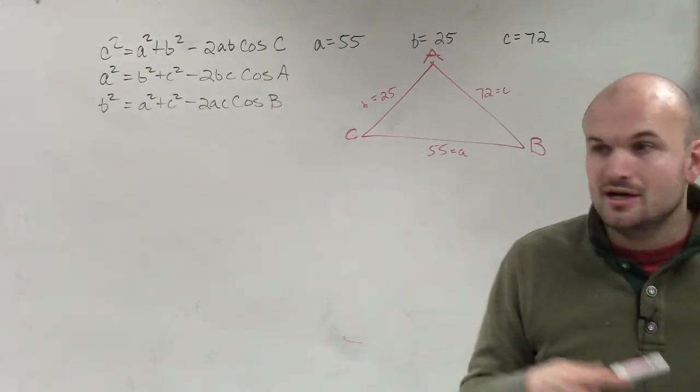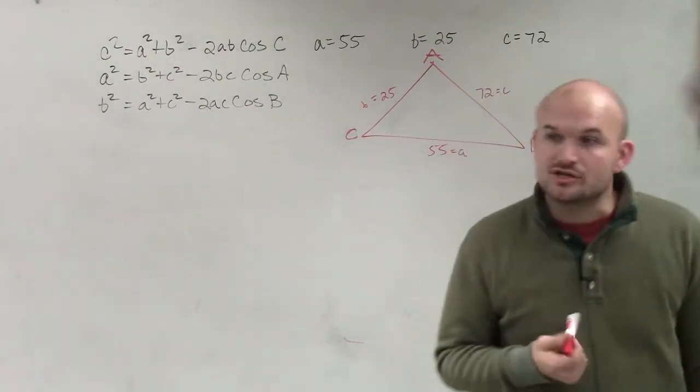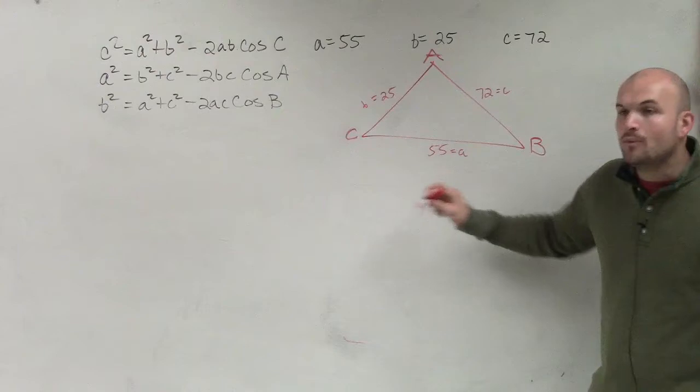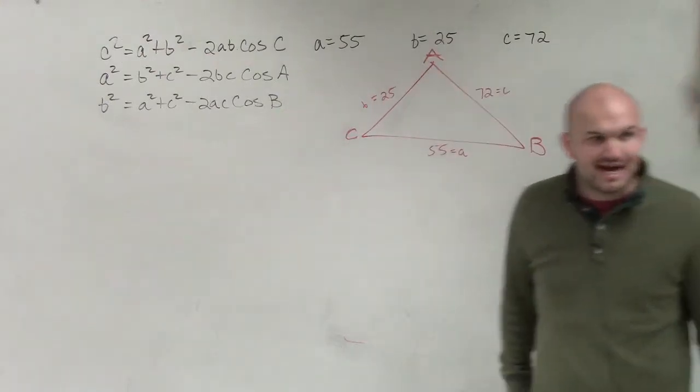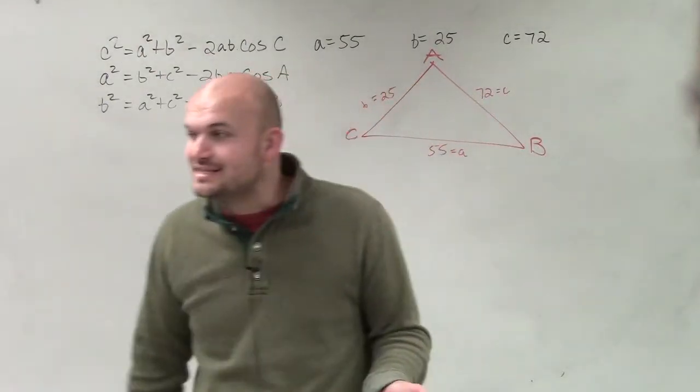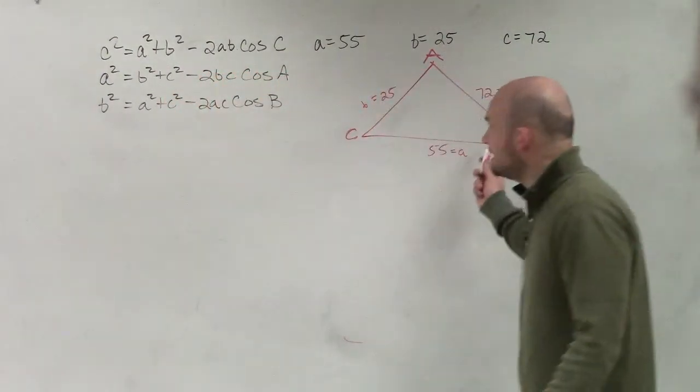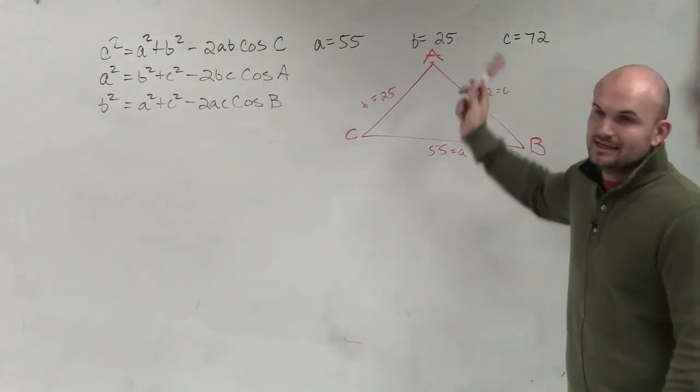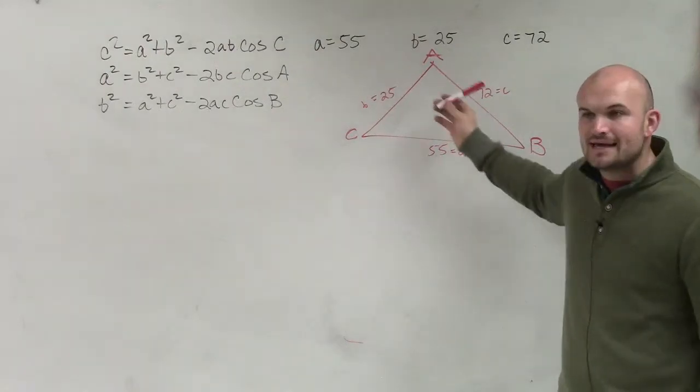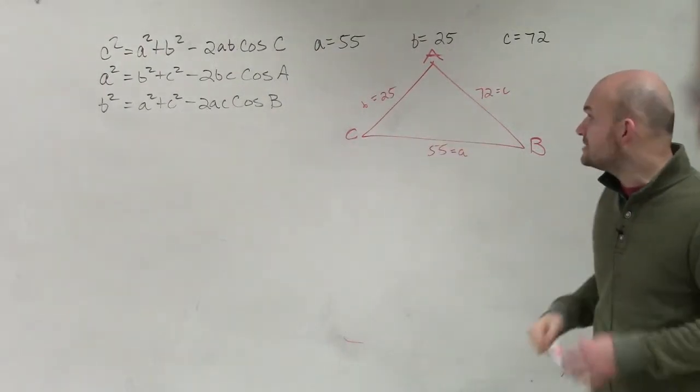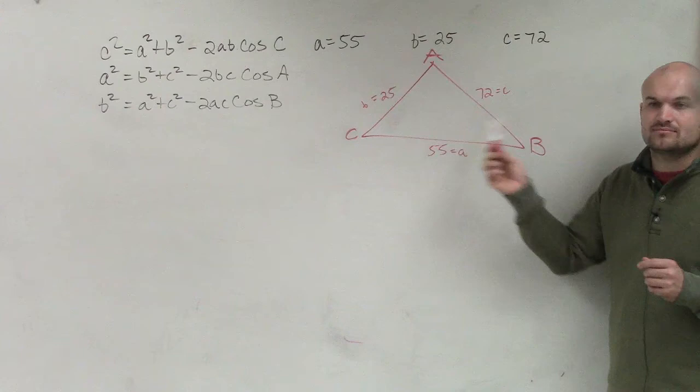So what I'm going to want to do when I'm doing the law of sines is I want to see, can I find the obtuse angle? So Kyle, when you're looking at this triangle, looking at the side lengths, which side length do you think is going to produce the obtuse angle?